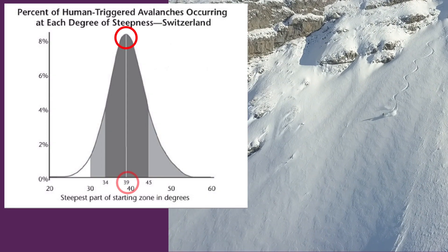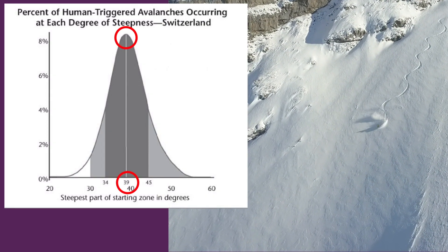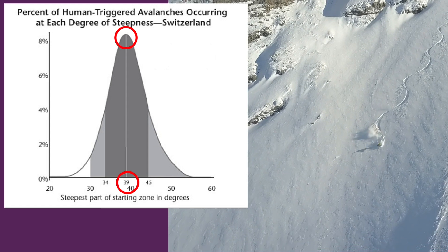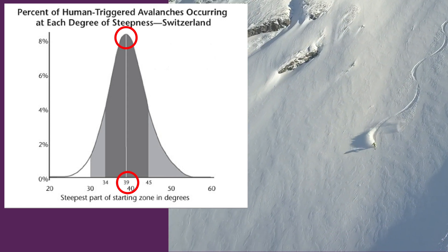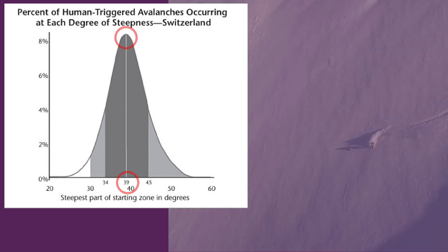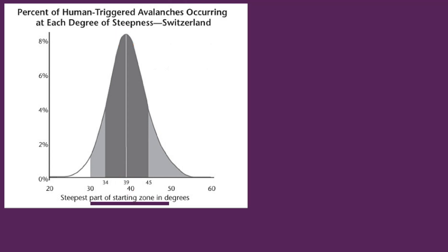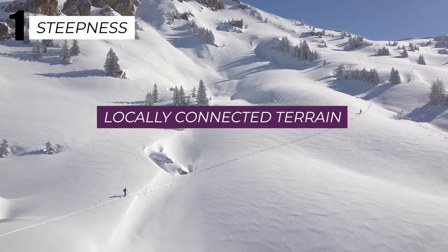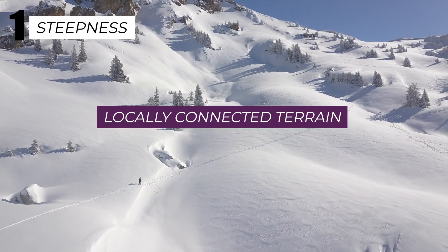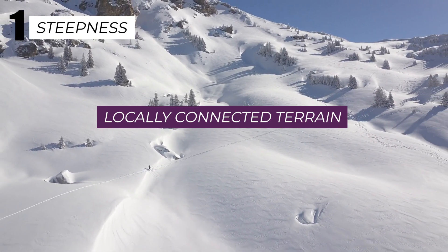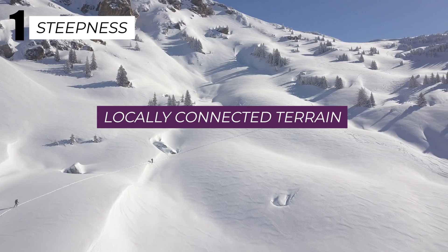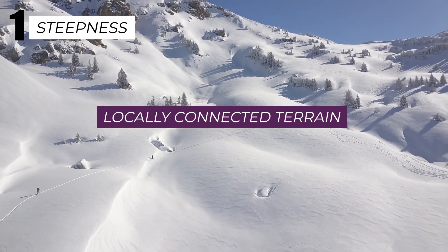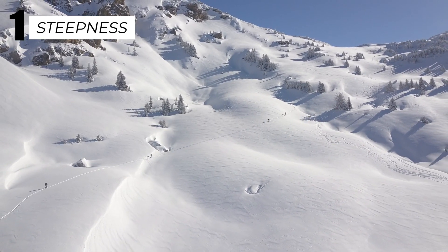The most dangerous gradient for avalanches is about 39 degrees — normally 37 to 40 degrees — as these are the most dangerous slopes. Be aware that this is just the starting zone steepness; when off-piste you must be aware of locally connected terrain. There's no sense thinking you're safe on a sub-30-degree slope if you're standing beneath a 39-degree slope. Big avalanches might start on a steep slope, pick up momentum, and spill large distances across even flat terrain before stopping.